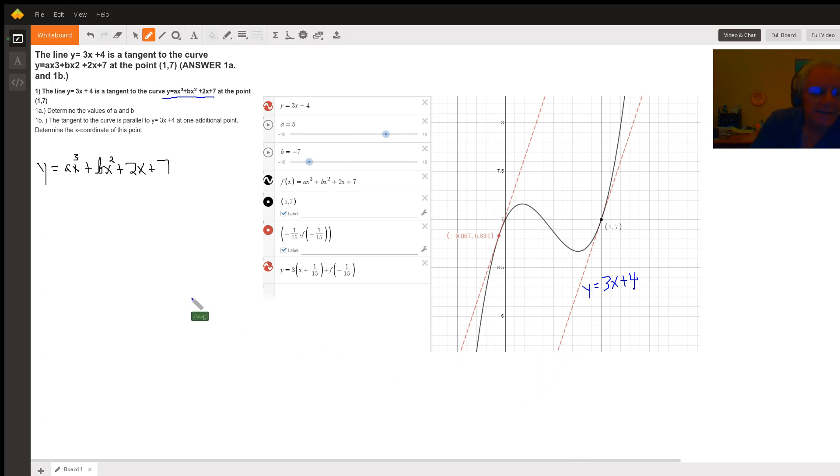So the key is understanding if you find the first derivative of y with respect to x, that will be a formula for the slopes of tangent lines. So if I take the derivative of this with respect to x, a and b are just constants, using the power rule: 3ax squared plus 2bx plus 2.